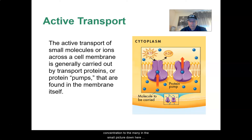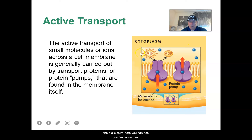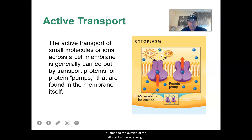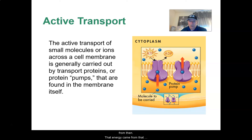Protein channels just let things flow through for diffusion from high concentration to low. But in this case, we're talking about going from a low concentration to the many. In the small picture down here, you can see what's inside the cell is just a few molecules, while outside the cell is a lot of molecules. Those few molecules go through the protein structure — in this case we call it the protein pump — and the molecules are pumped to the outside of the cell. That takes energy, and that energy is called ATP. Where did that energy come from? It came from that organelle, the mighty mitochondria.